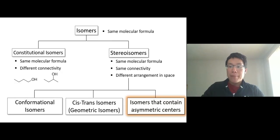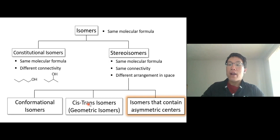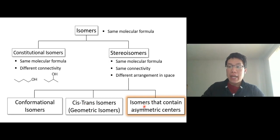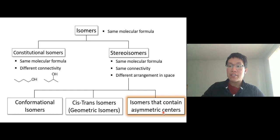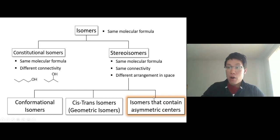We're going to talk about a new type of isomer besides conformational isomers and cis-trans isomers. Another type of stereo isomer is the isomer that contains asymmetric centers. Let's talk about it in detail.